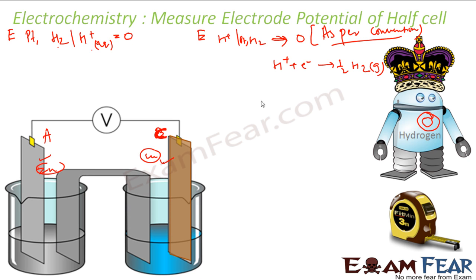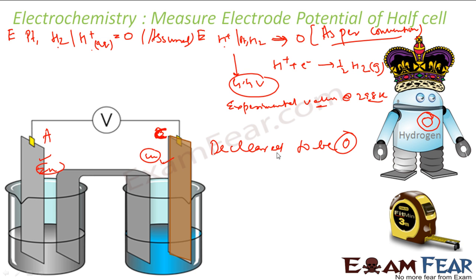So, this is zero assumed value. And please note, the estimated value of this is almost 4.4 volt. From H+ to H2, that is the actual value, that is the experimental value. At STP, at 298 Kelvin, this is the absolute value. But just for the basis of comparison, hydrogen potential is declared to be zero at all temperatures. Please note, it is declared to be zero at all temperatures. But actually, it is not the case.